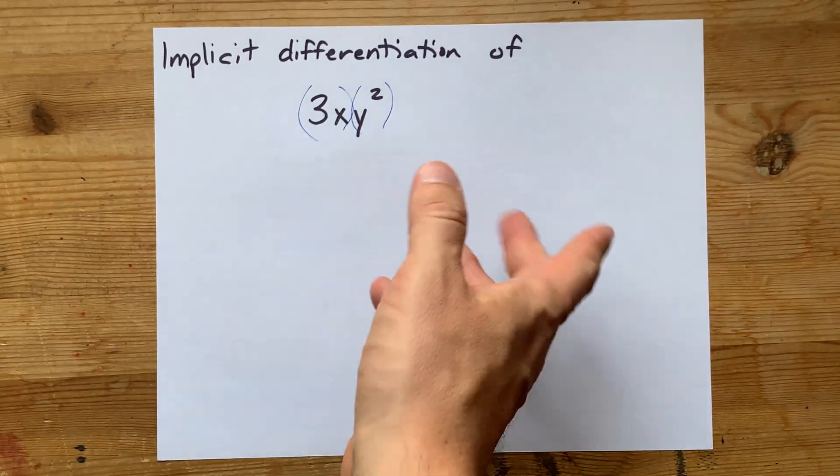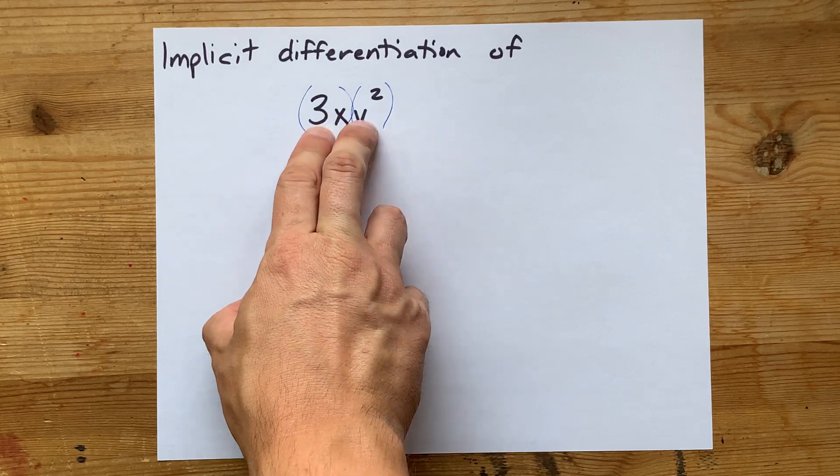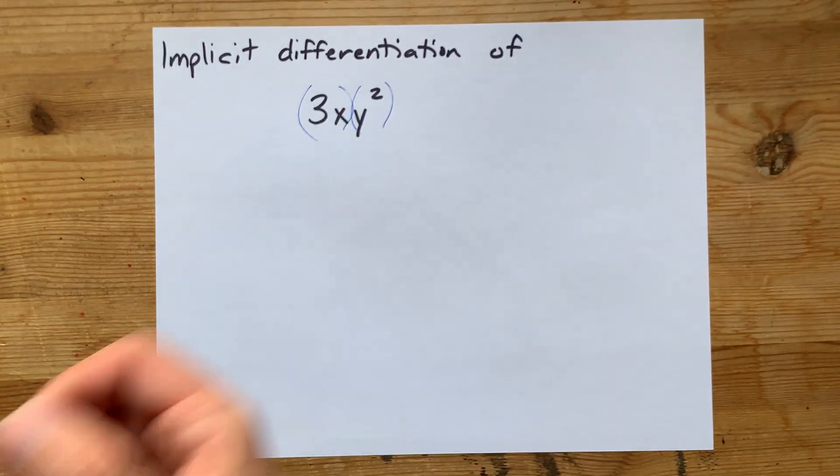Now, how do you do the differentiation of two functions that are multiplied by each other? It's product rule.